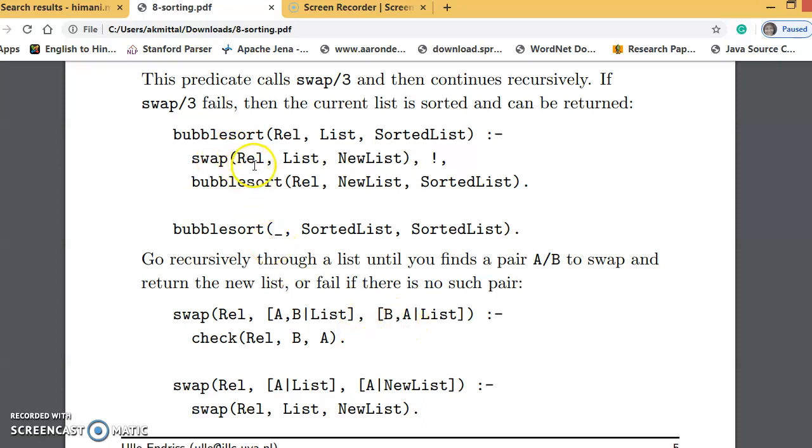After we return from swap, then we use cut here because we don't want backtracking to happen, and then we call bubble sort with the new list as our answer. If this returns false, then we will go back from here and come here.